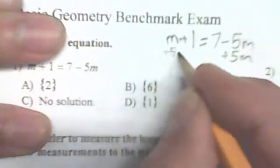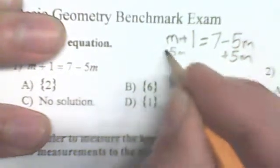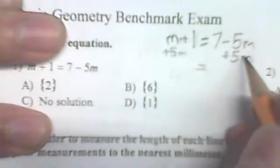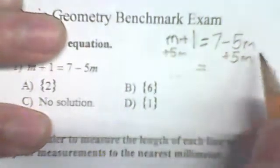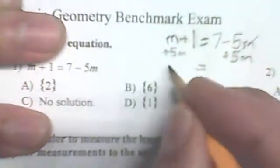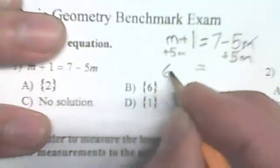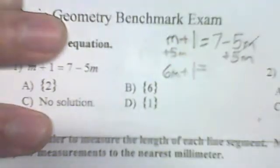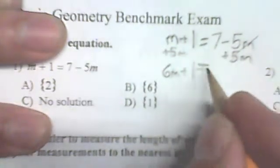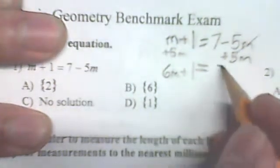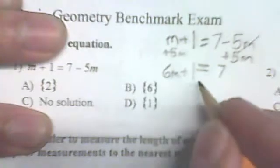The first step we want to make is to get all the variables on one side. We eliminate them on one side as soon as possible and move them over so they're all positive and we don't have to deal with any sign changes. So we have 6m plus 1 equals 7.